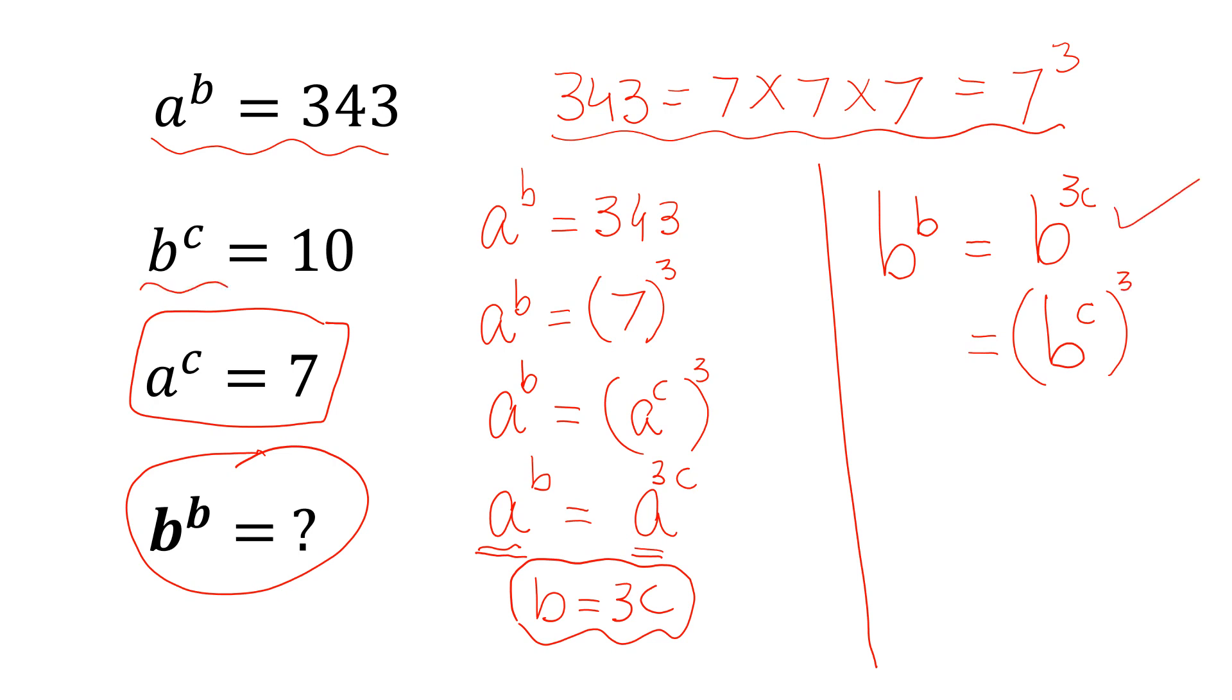And b to the power of c equals 10, so we can substitute 10 here and this gives us 10 to the power of 3. Therefore, b to the power of b equals 1000. This is the value of b to the power of b.